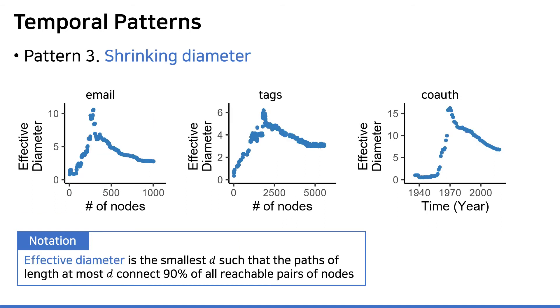The third pattern is the phenomenon of shrinking diameter. In the hypergraph setting, diameter is defined as the maximum of distance between any pair of nodes, where the distance is the number of hyperedges required to move from one to another. We actually investigated the effective diameter which is more robust to outliers, and we observed that the effective diameter eventually starts to decrease over time.